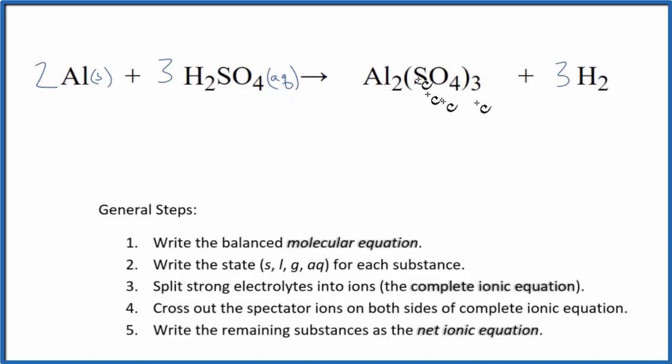Aluminum sulfate, that's also aqueous. We could check that on a solubility chart or just know that aluminum sulfate is an aqueous compound. A little AQ, that's going to dissolve and dissociate. Hydrogen, that is a gas. So we have the states for each substance.